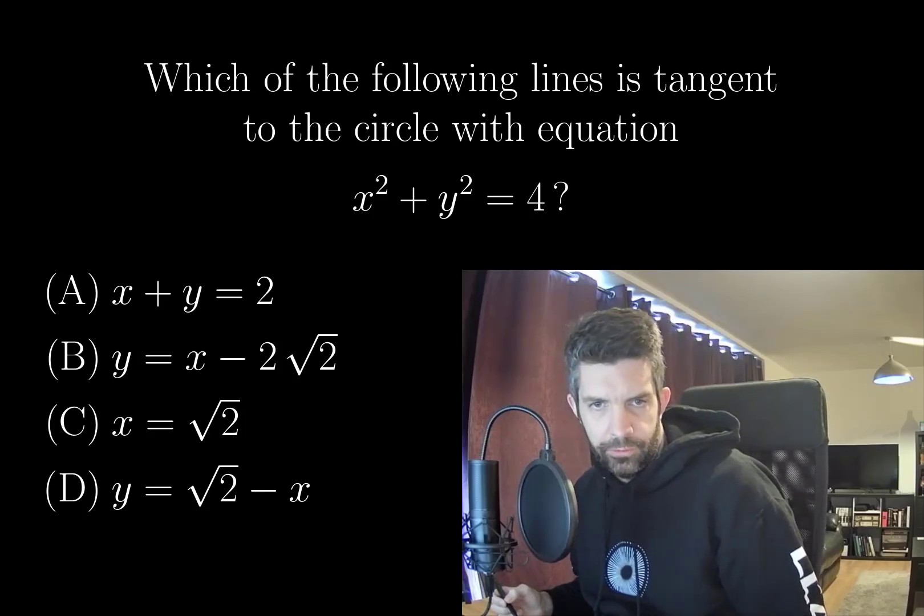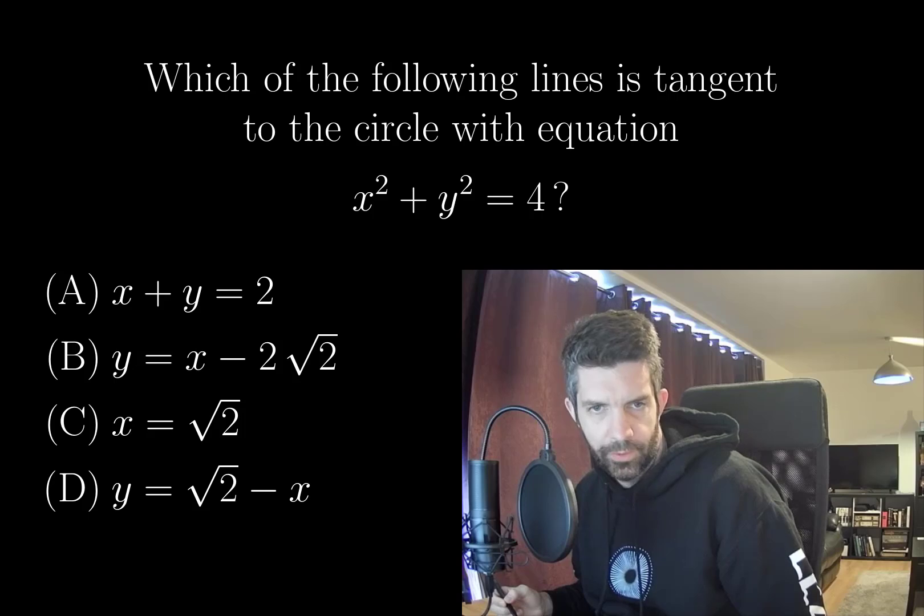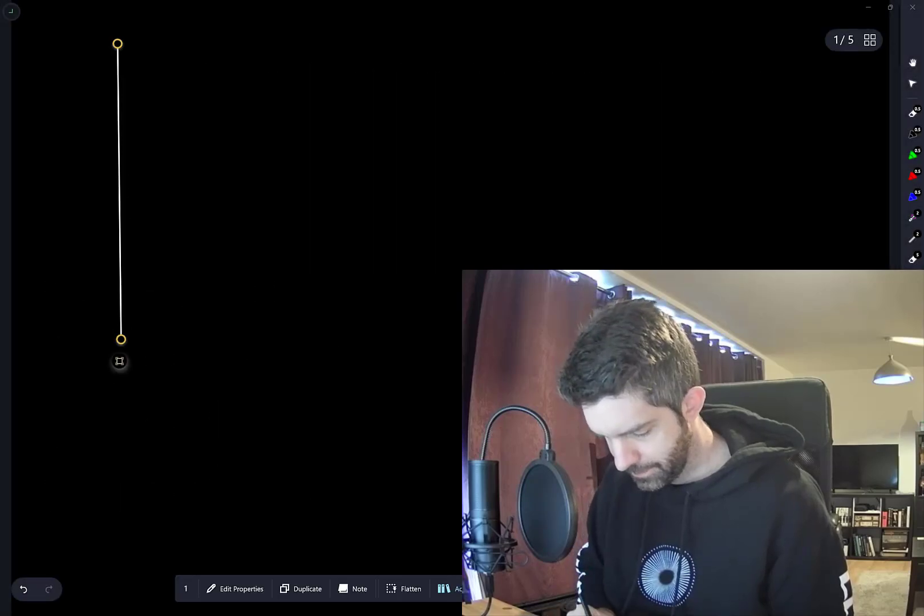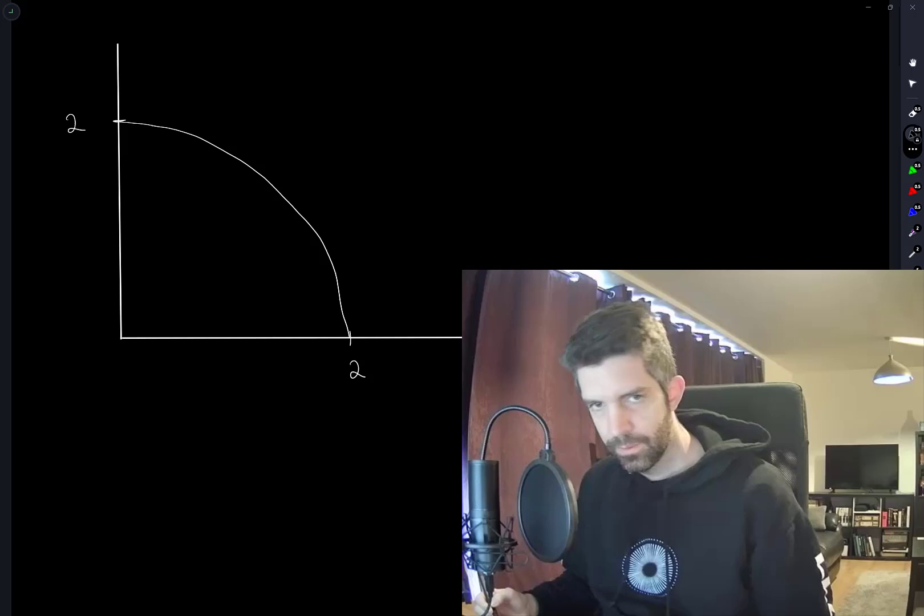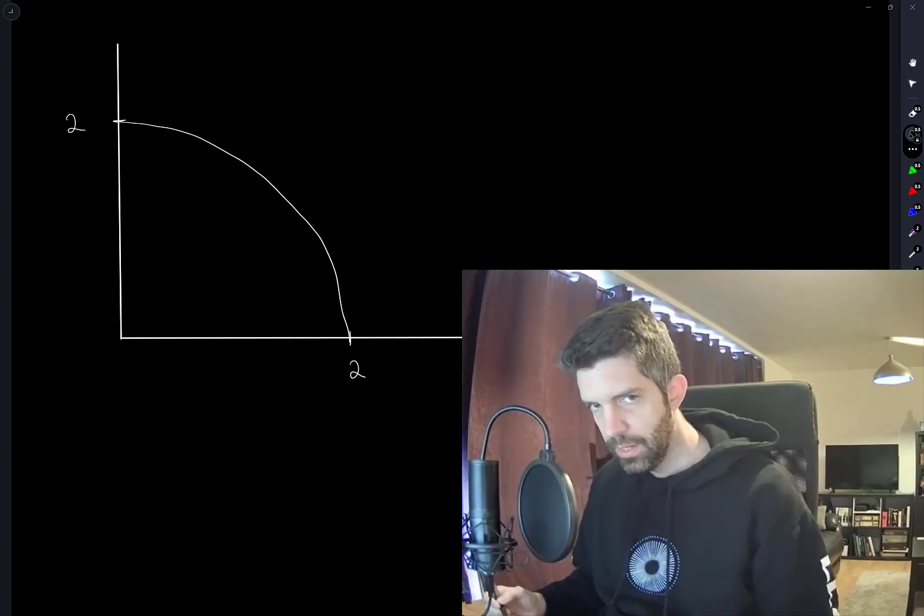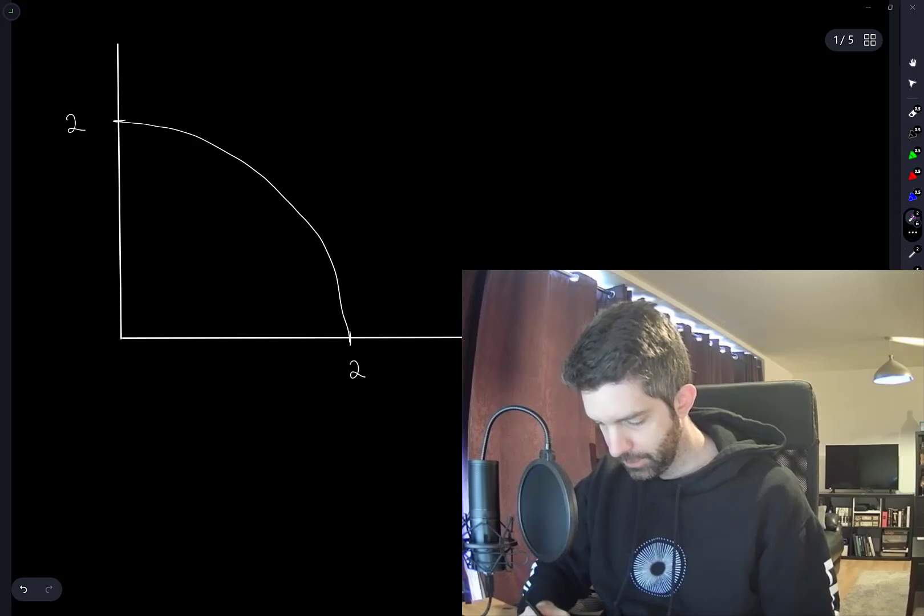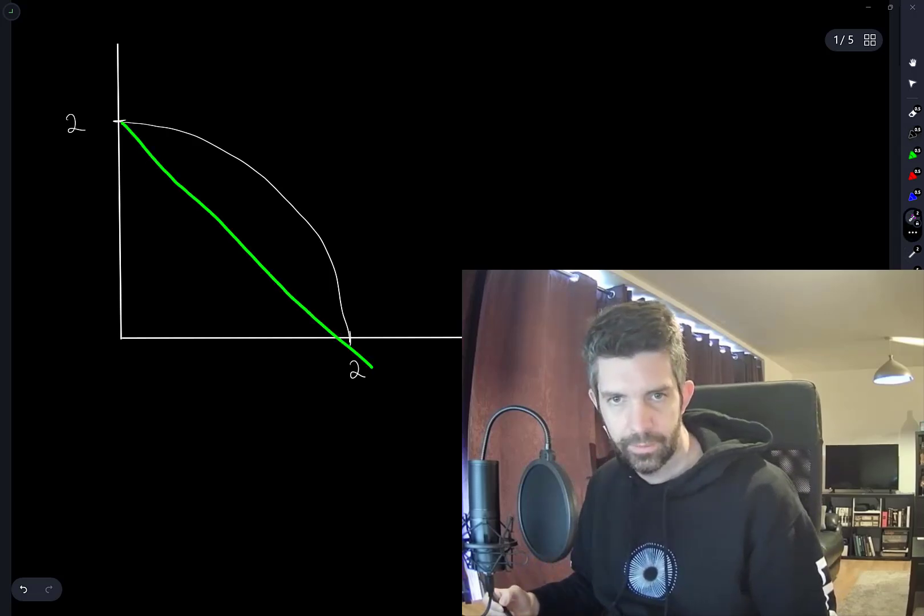The lines are all—are they all in the first quadrant? Or at least the place where they're actually likely to intersect this circle? x + y = 2 is a straight line that goes like that. So that's clearly not the answer.